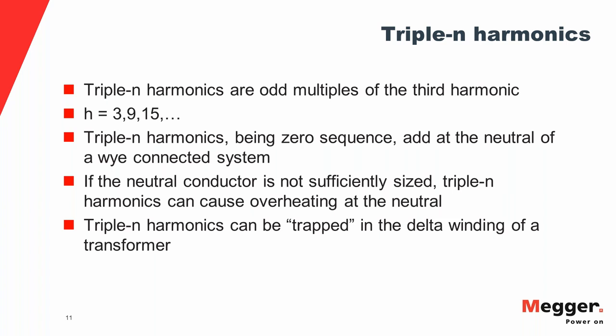Triple N harmonics are odd multiples of the third harmonic: third, ninth, fifteenth. They are zero sequence harmonics. Because they are zero sequence, the currents flowing through the A, B, and C phases have no phase angle difference between them — they are coherent in phase. When they converge at the neutral, they add up, resulting in the total current flowing through the neutral conductor. If there are large zero sequence harmonics in the system and the neutral is not sufficiently sized, there will be overheating of the neutral conductor.